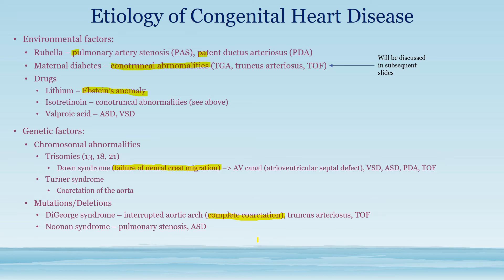Noonan syndrome is somewhat similar to Turner syndrome and is associated with pulmonary stenosis and ASD. Importantly, Noonan syndrome is autosomal dominant, unlike Turner syndrome which is an XO chromosomal abnormality. Noonan syndrome features include pectus excavatum, learning difficulties, and a webbed neck. However, the individuals affected are usually young males.